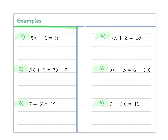Let's start with the first one. Our goal is always to isolate the variable using inverse properties. We have 3x minus 6 equals 0. We want to undo everything on the side with the variable. Addition and subtraction first — we add 6 to both sides to get 3x equals 6. Then divide both sides by 3 to get x equals 2. You can check: 3 times 2 minus 6 equals 0. 6 minus 6 equals 0. It works.